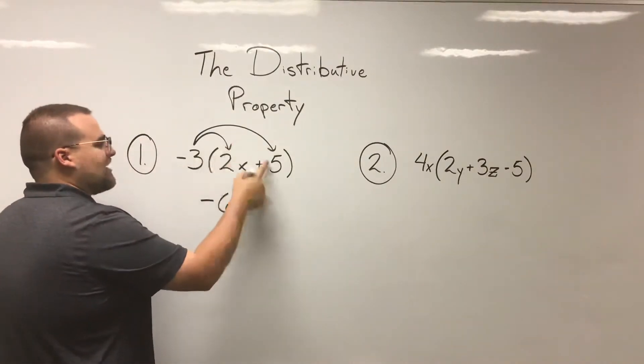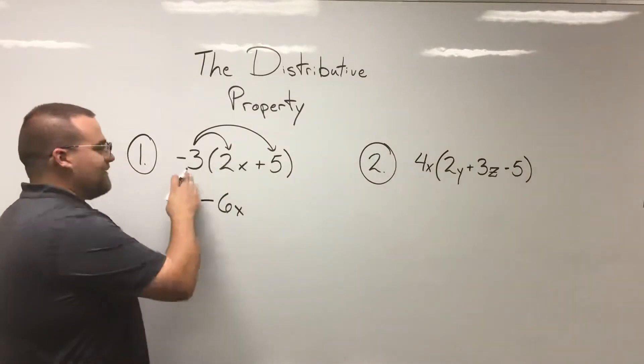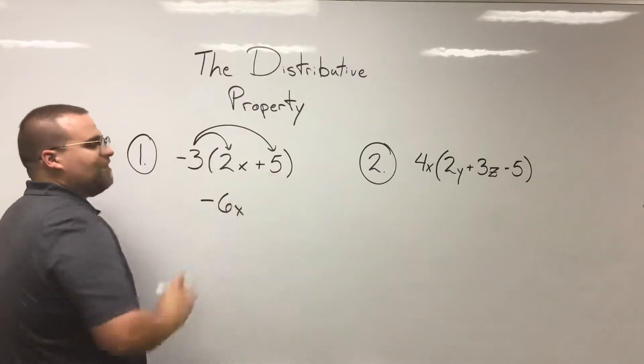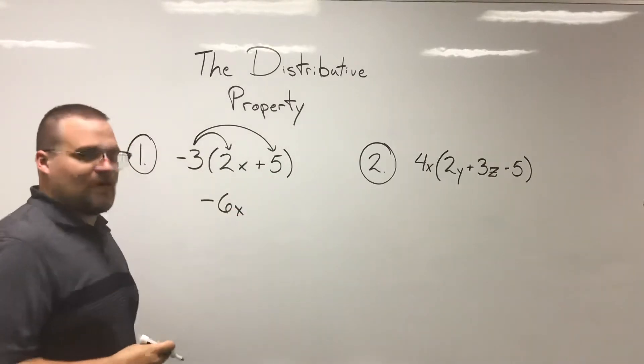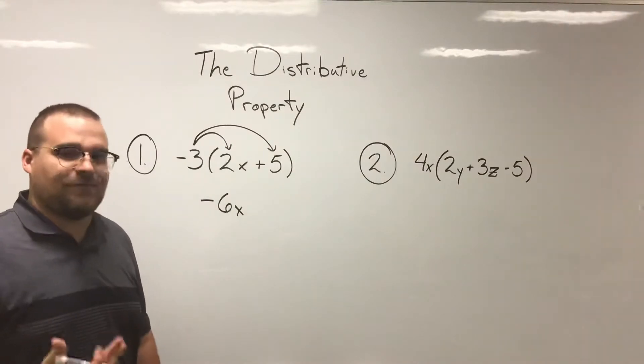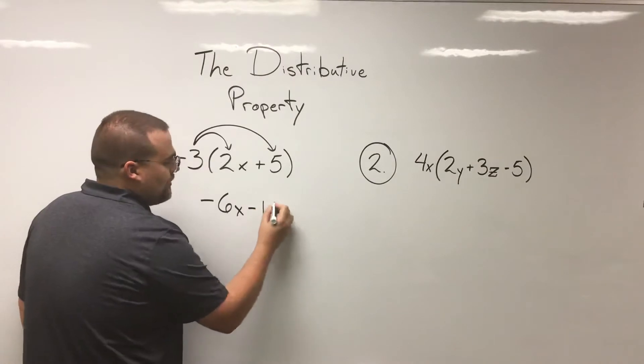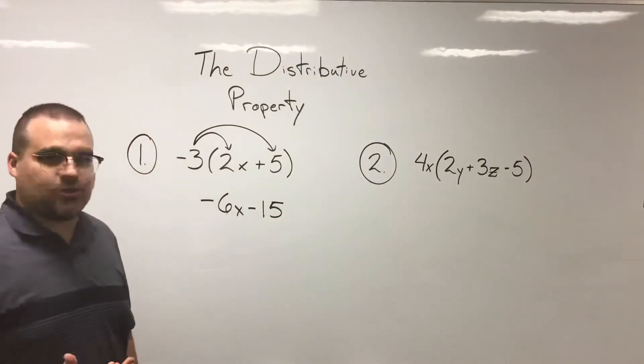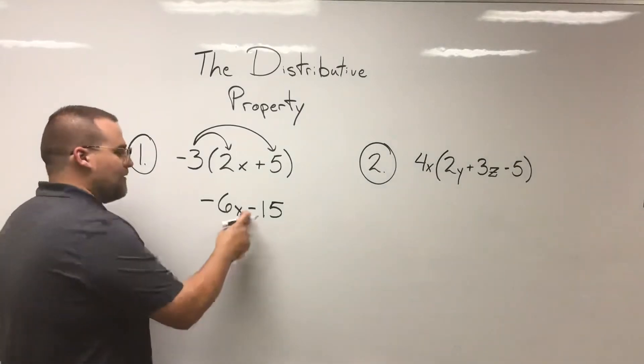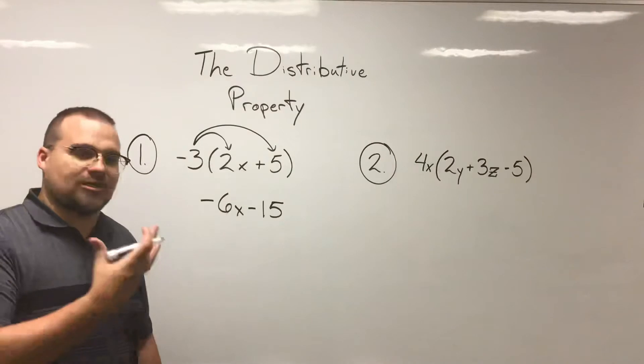Now we'll take a look at our second multiplication that has to occur, where the negative three distributes to the five. Negative three times a positive five is going to get us negative 15. I want to make sure that I include my sign in whenever I'm writing down the product to that multiplication, so that I can have that sign or that operation in the resultant expression.